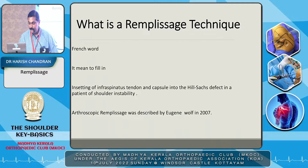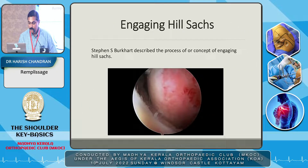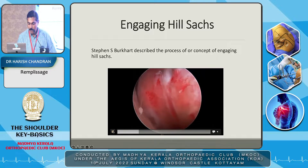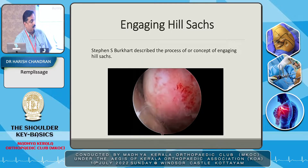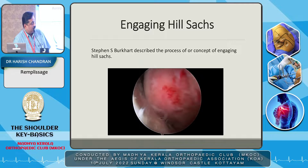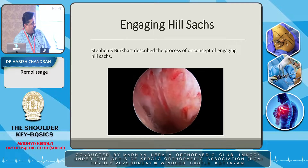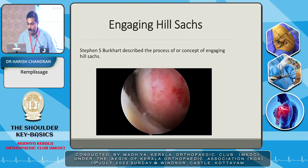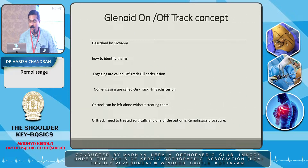Described by Eugene Wolff, Stephen Burkhart described the concept of engaging Hill-Sachs — that is when the head of the humerus during abduction and external rotation movement engages with the glenoid.